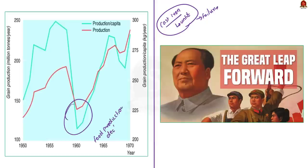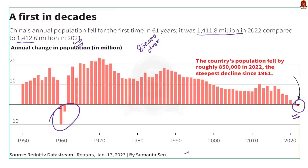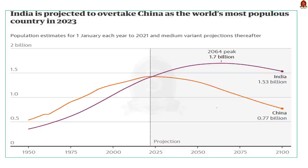Now let us see the present population decline in China. According to China's National Bureau of Statistics, China had 1.411 billion people at the end of 2022 compared with 1.412 billion in 2021 — a drop of 850,000. After 1961, this is the next significant decline in China's population. The number of births stands at 9.56 million and the number of deaths at 10.41 million. The takeaway for India is that India is expected to overtake China as the most populous country in the year 2023.